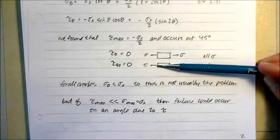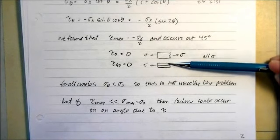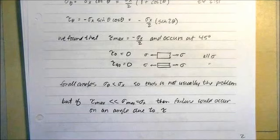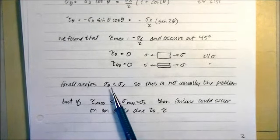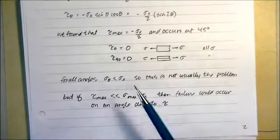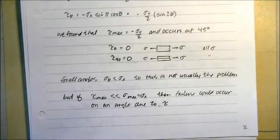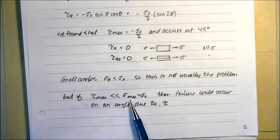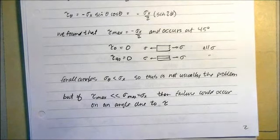Similarly, if the angle is at 90 degrees, you're taking the two pieces and pulling them straight apart, so we have all sigma if the angles are zero or 90 degrees. But if the angle is at 45 degrees, we have the maximum shear. For all angles, sigma-theta is always going to be less than sigma in the x-direction, so it's generally not going to fail in sigma-theta. However, if tau-max is less than sigma-max, we could have failure at some angle due to shear stress.